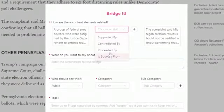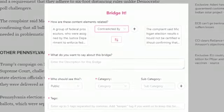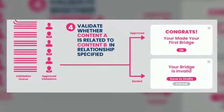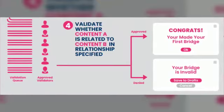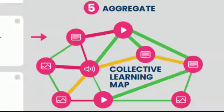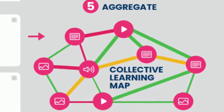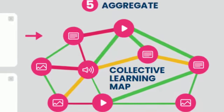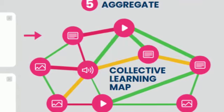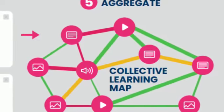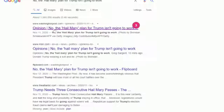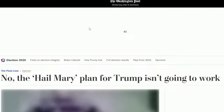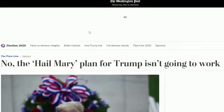When I submit a bridge it goes to a validation queue, where approved validators confirm whether content A is related to content B in the relationship specified. If so, it gets put in the collective learning map, which makes the bridge available to the world of other people interested in this content. There is no limit to associating bridges with the content. Clicking the badge displays the bridges.